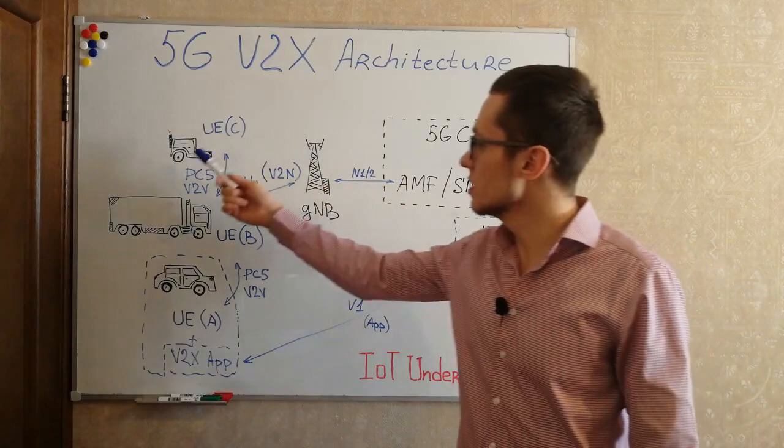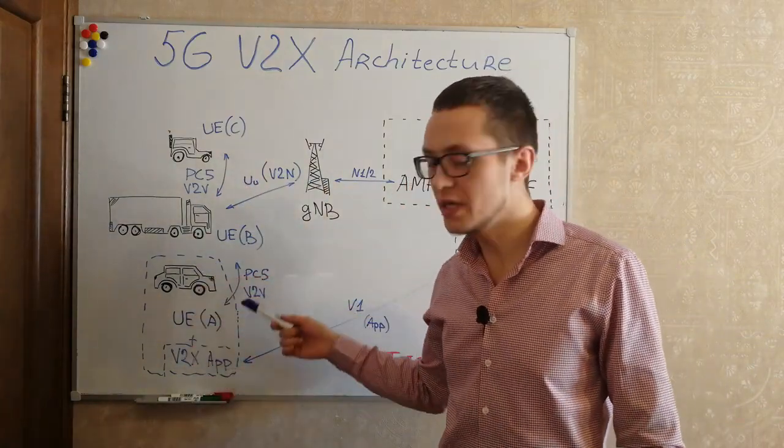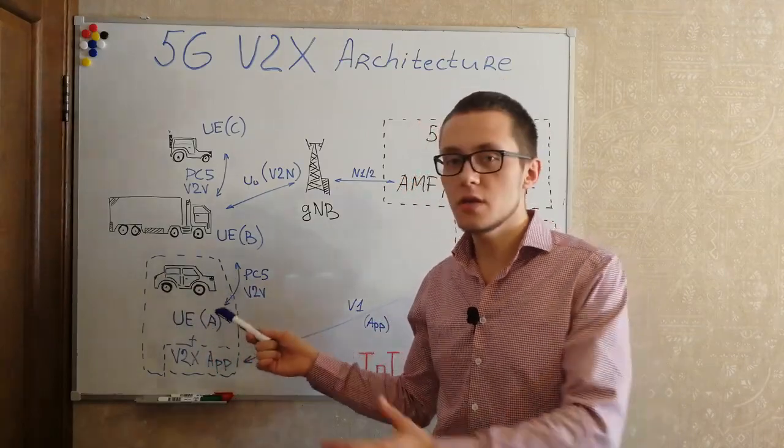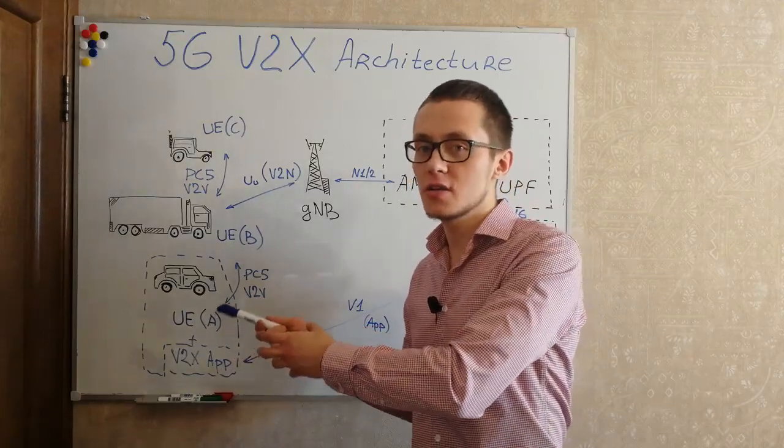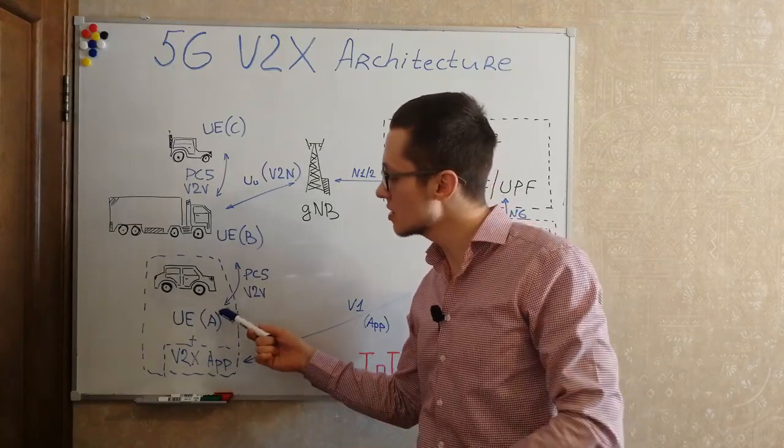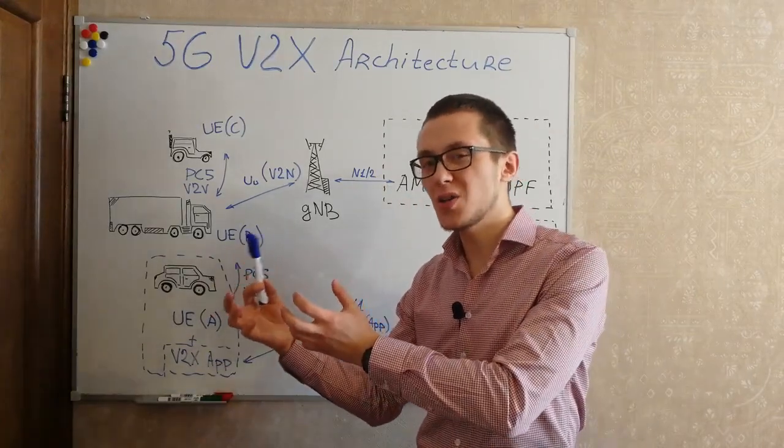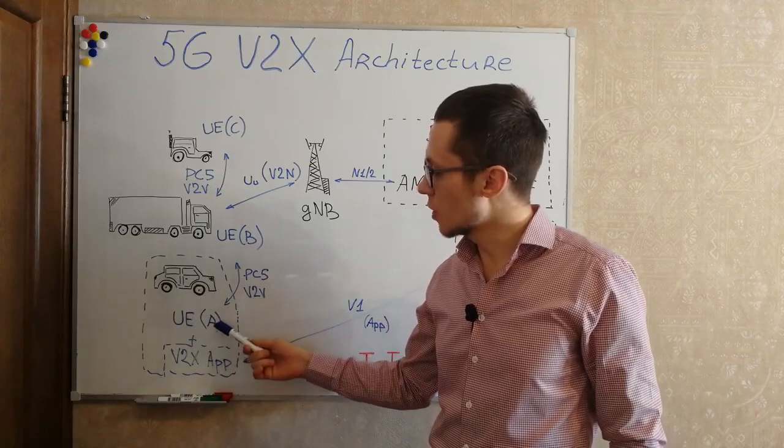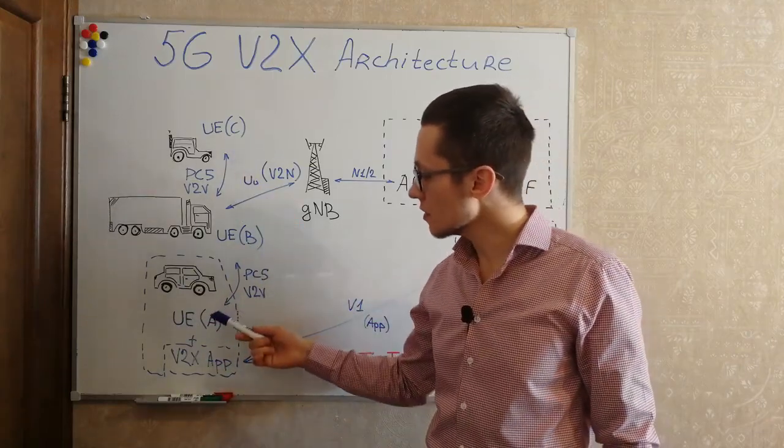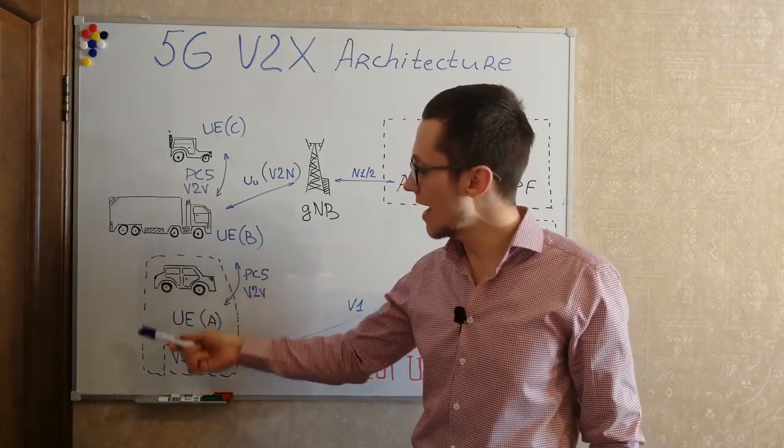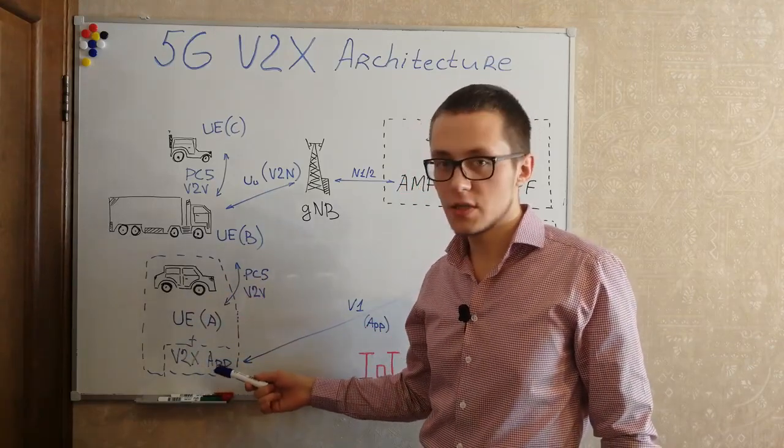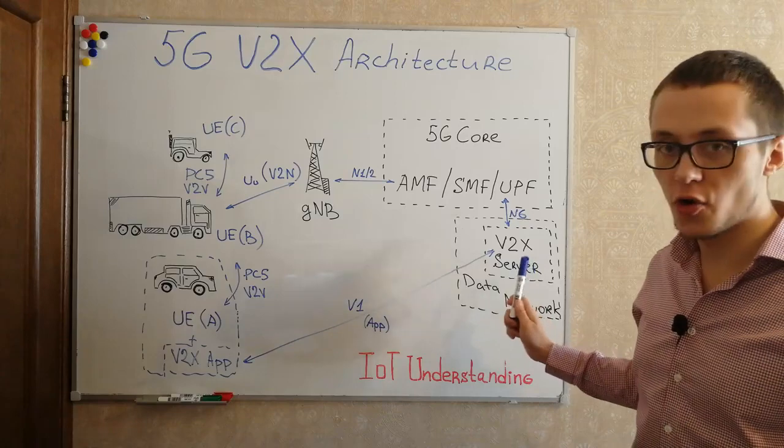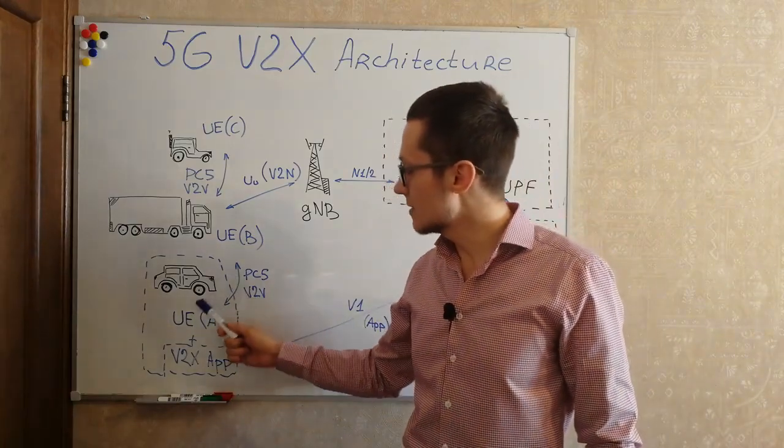Here we can see different cars and we suppose that that car is a user equipment. Either inside that car integrated a user equipment with all of these capabilities or it is maybe just a part of a car like onboard unit. And this user equipment A, B, C, they all of them have an application, a special application in order to talk with the V2X application server.